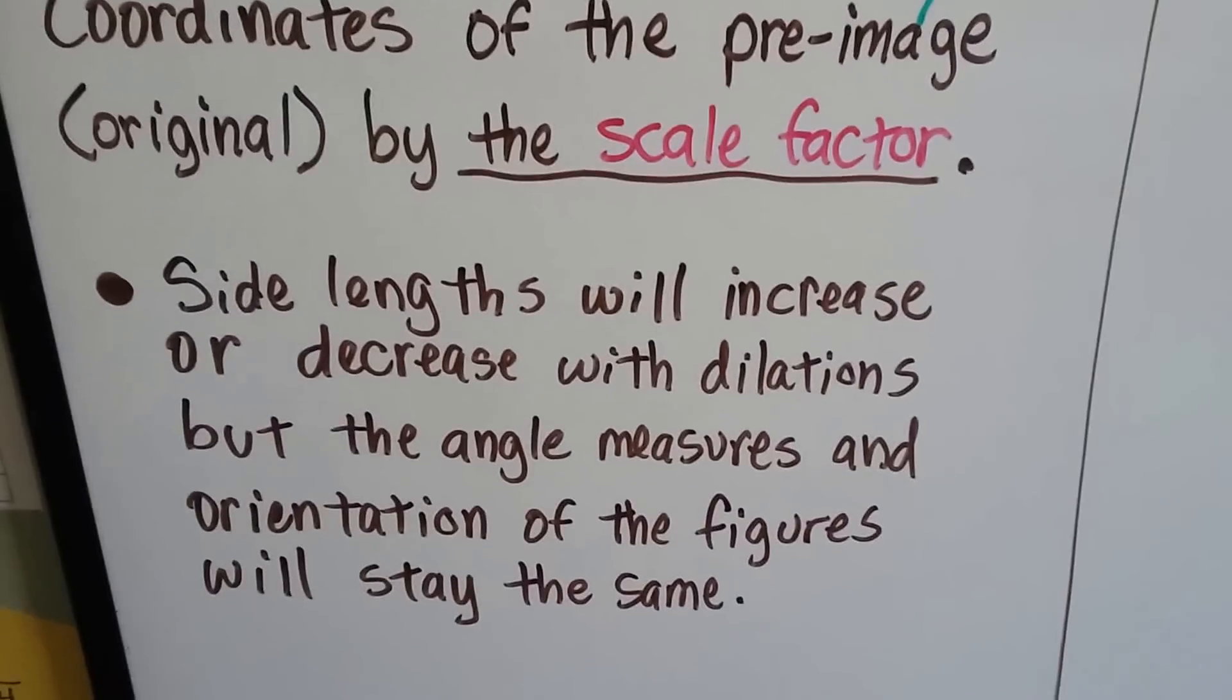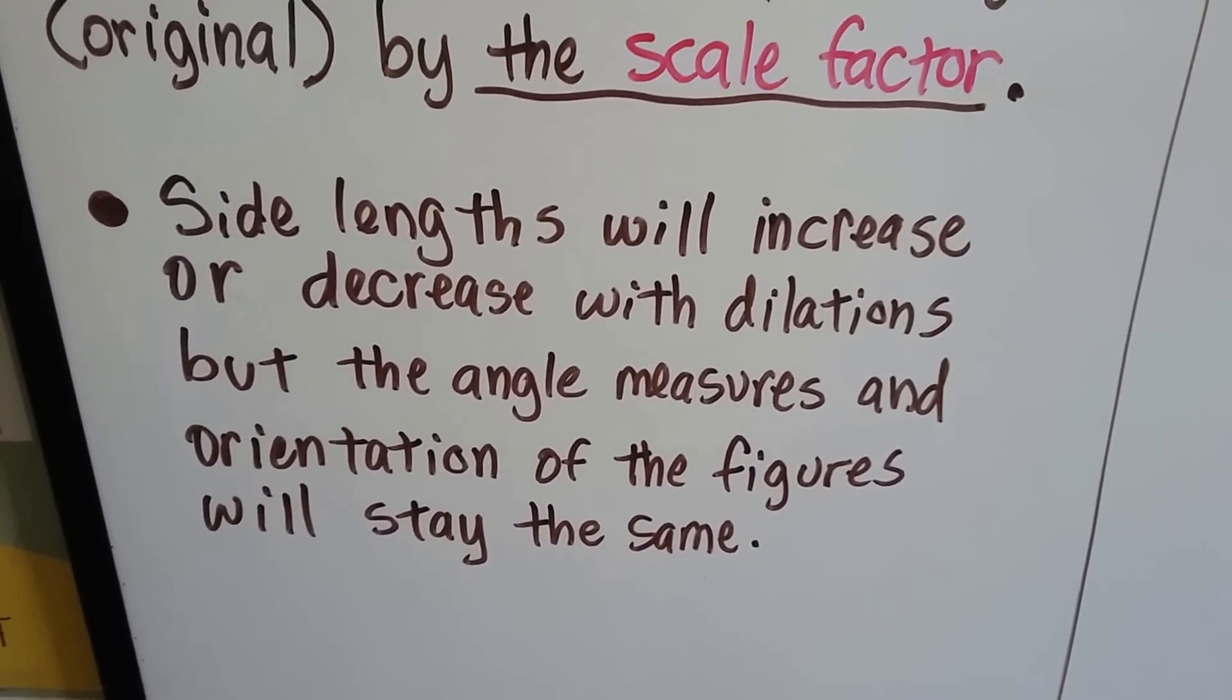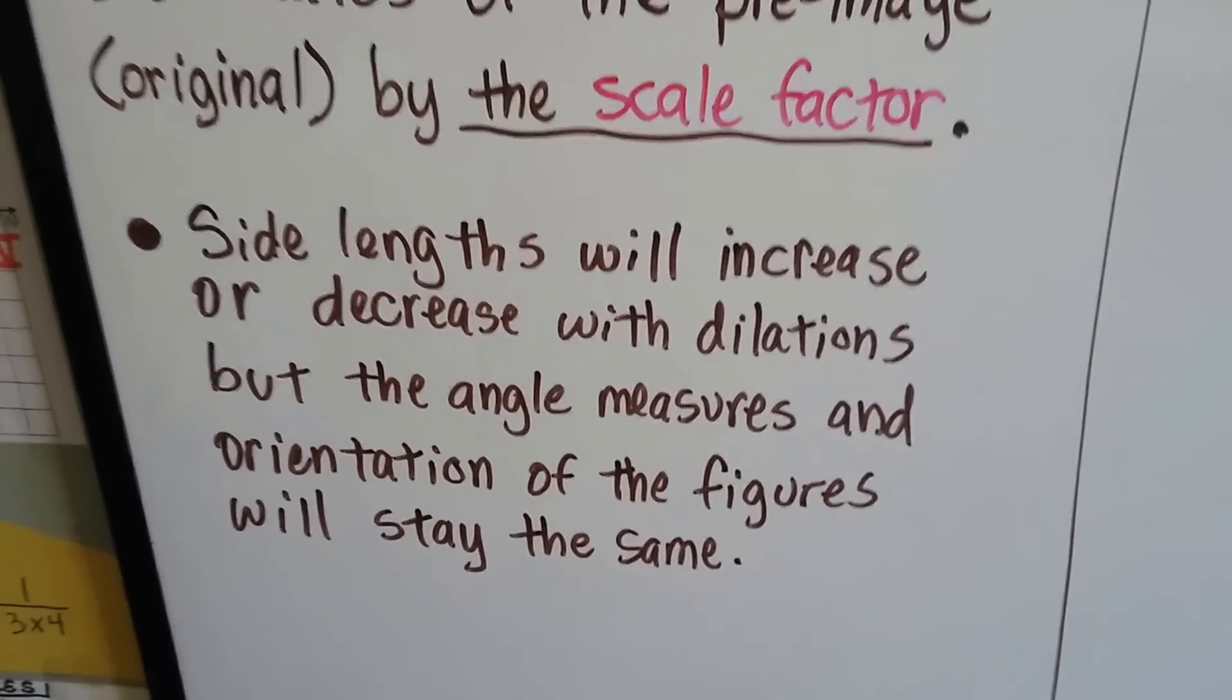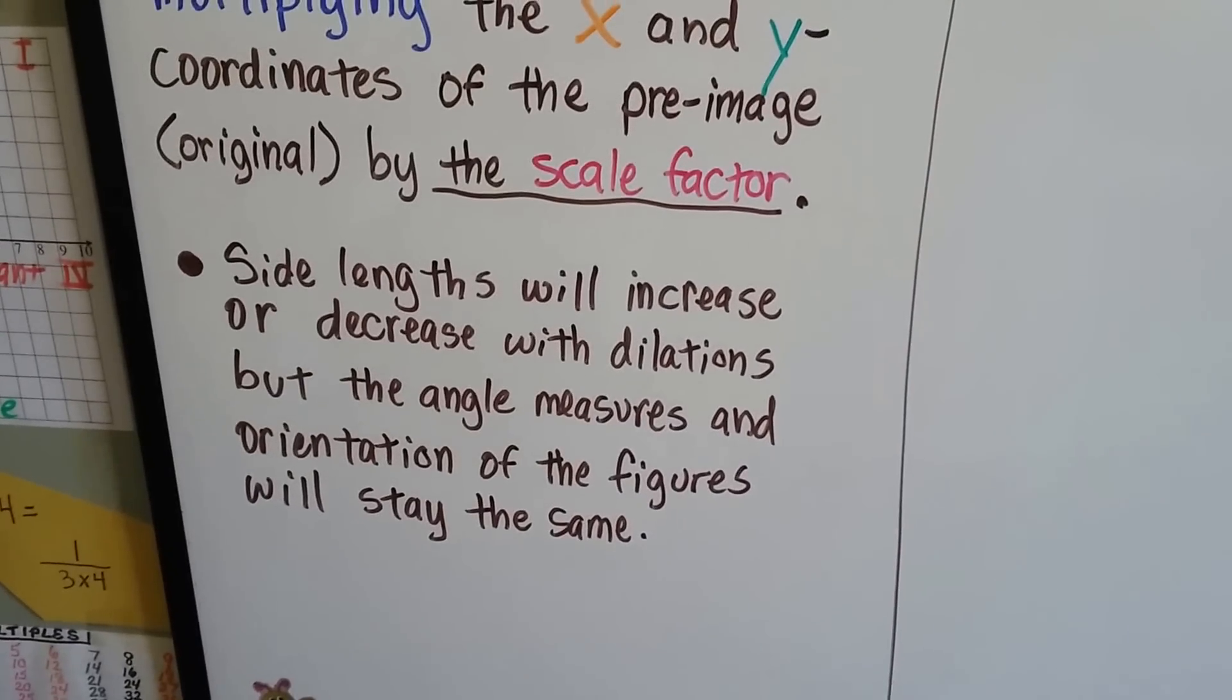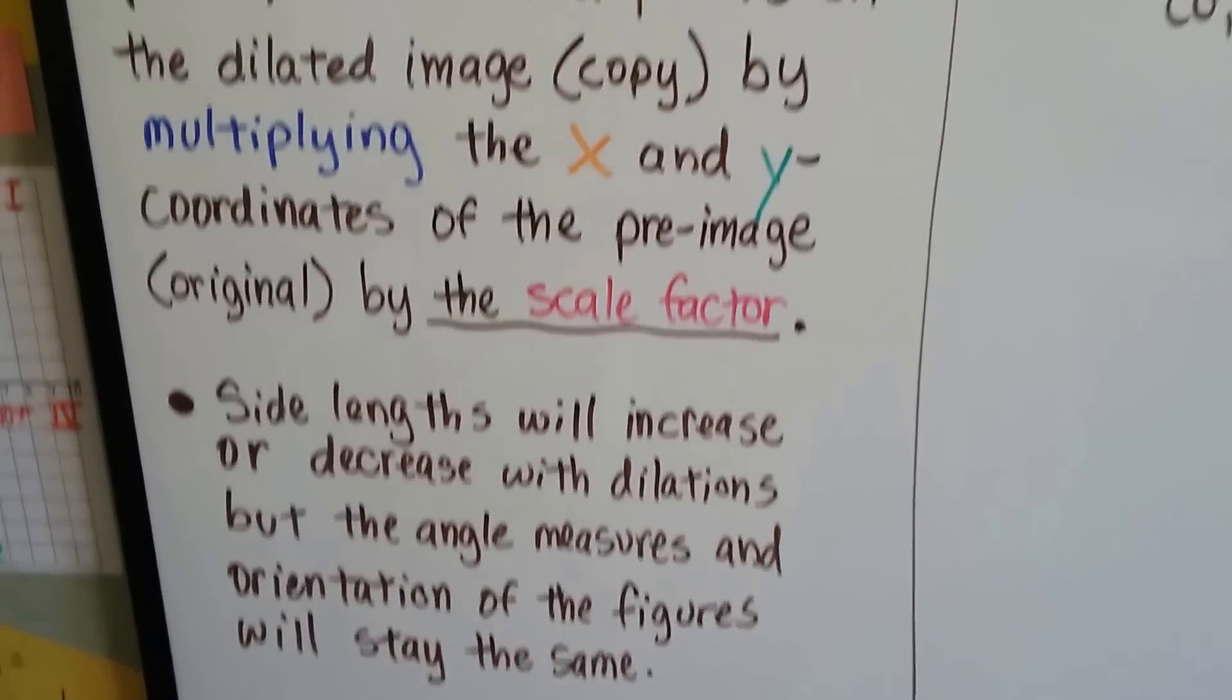The side lengths will increase or decrease with dilations, but the angle measures and the orientation of the figures will stay the same. So remember, the side lengths are going to get bigger or smaller, but the angles and the orientation are going to stay the same.